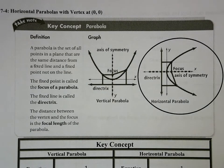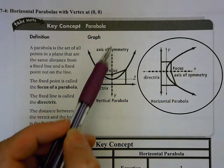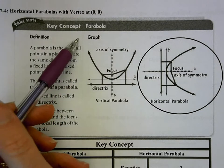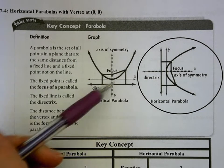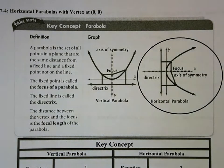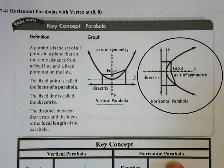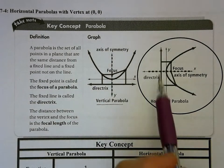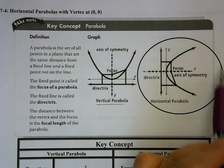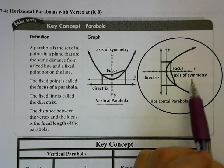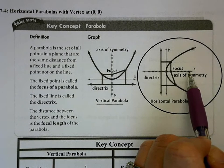7.4 horizontal parabolas with vertex at (0,0) is our lesson for today. Up to now we've studied vertical parabolas, where the end behavior goes to positive infinity along the y-axis. Now we're switching things around — that's called a horizontal or sideways parabola, where the end behavior is pointed towards x equaling positive infinity.